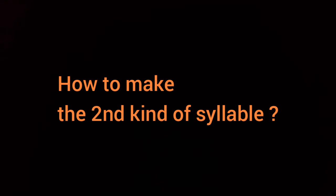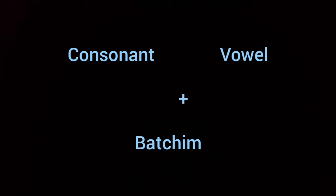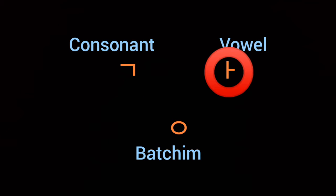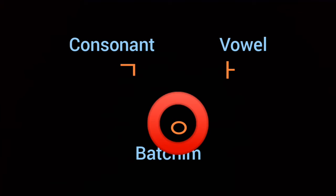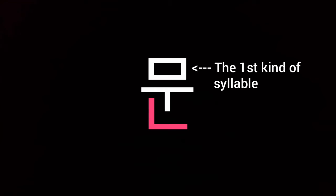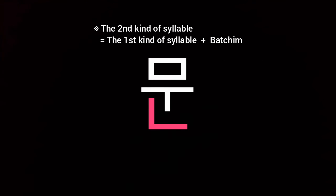Let's talk about how to make the second kind of syllable. We just need to put together three different kinds of alphabets: one consonant, one vowel, and one 받침. Let's combine them like this. The 받침 must be at the bottom. Just like that, we made one second kind of syllable. If you add one 받침 to the first kind of syllable, it becomes the second kind of syllable. It's very easy to make it, isn't it?